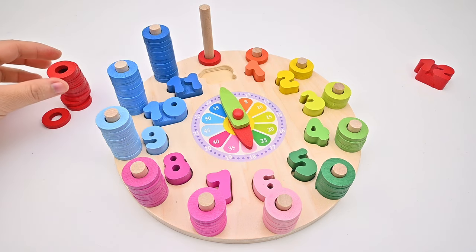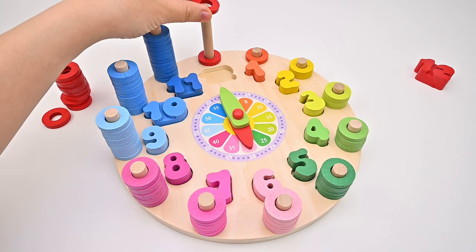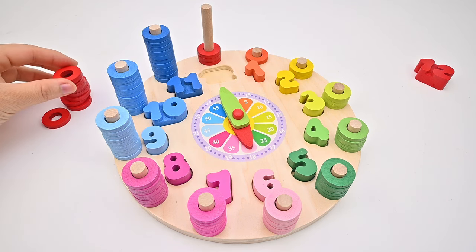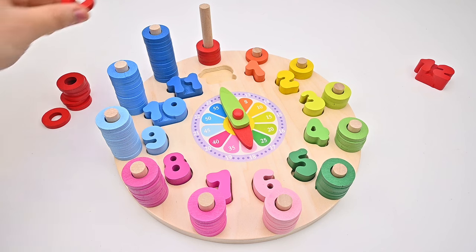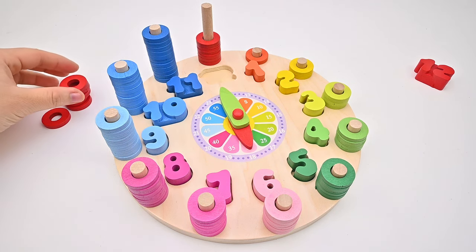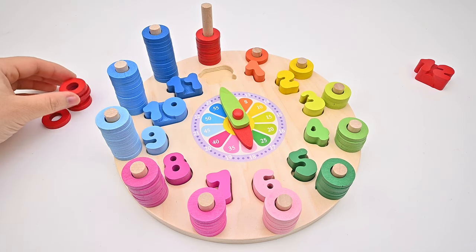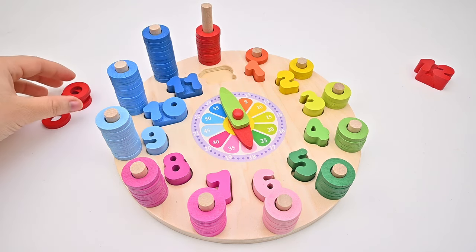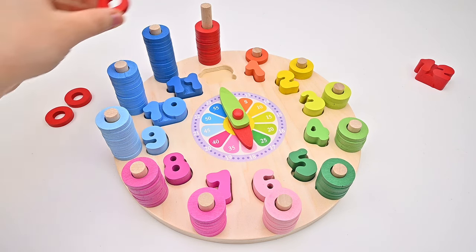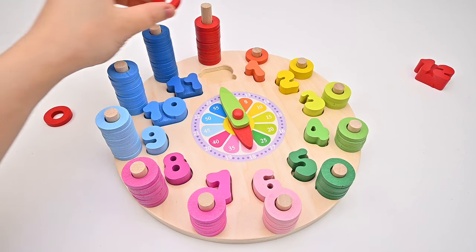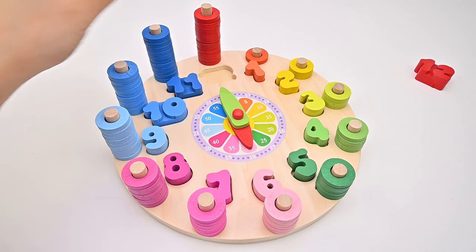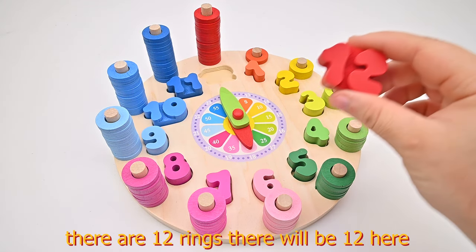1, 2, 3, 4, 5, 6, 7, 8, 9, 10, 11, 12. There are 12 rings. There will be 12 here.